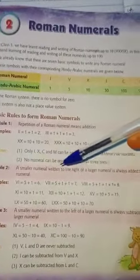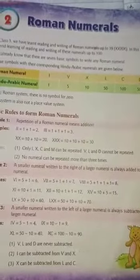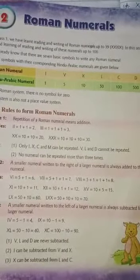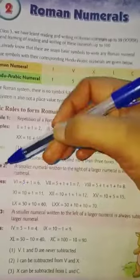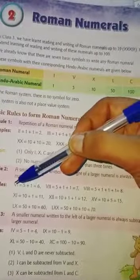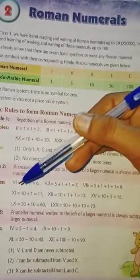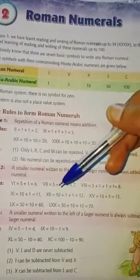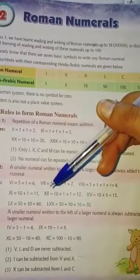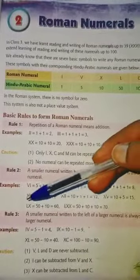Rule number 2: A smaller numeral written to the right of a larger numeral is always added to the larger numeral. For example, V is the larger numeral and I is the smaller numeral written to its right, so it is added: V means 5 and I means 1, so 5 plus 1 equals 6. VII means 5 plus 1 plus 1 equals 7. Similarly, LX means 50 plus 10 equals 60.